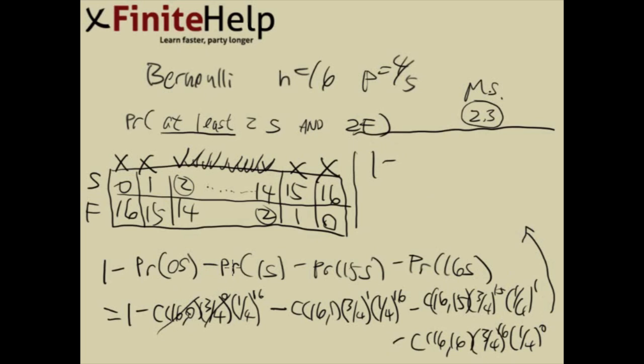16 choose 0 is going to be 1. So we're really only looking at 1 fourth to the 16. And that's something like 0, so I'm just going to write 0 here. This is going to be 16 times 3 fourth times 1 fourth to the 15. And that's going to be something really close to 0 too. So I'm just going to call it 0. 16 choose 15 is also 16. So we have 16 times 3 fourth to the 15 times 1 fourth. This is actually going to be something. This is going to be 0.053.